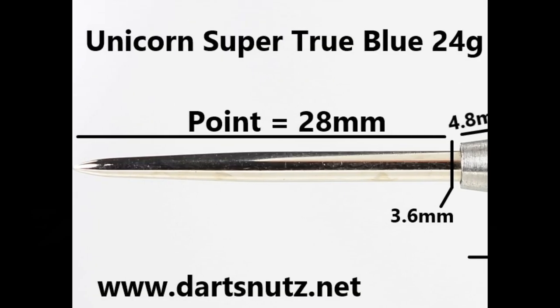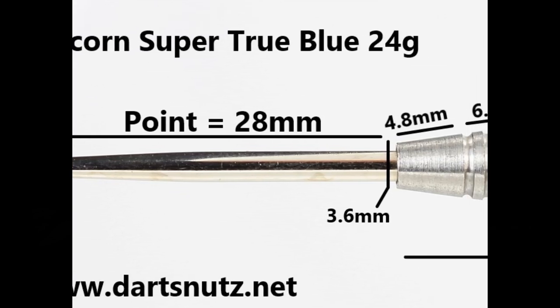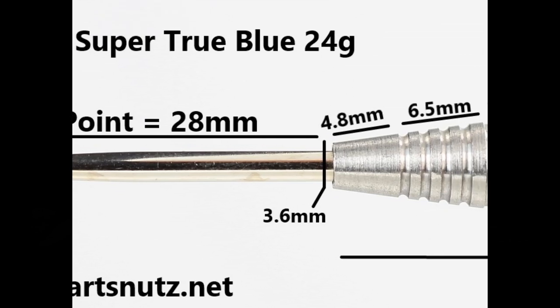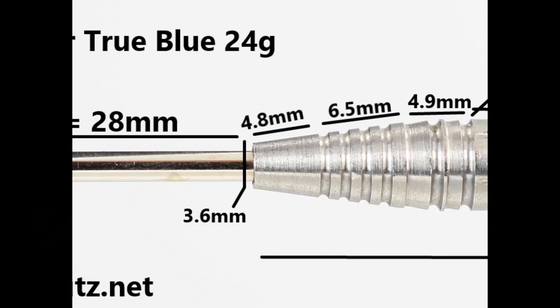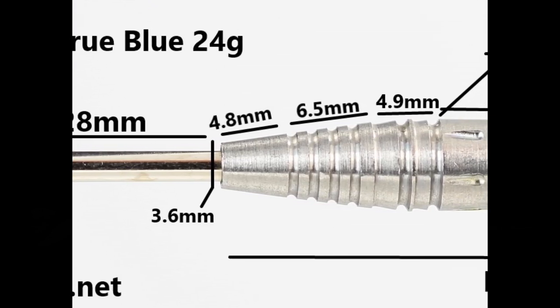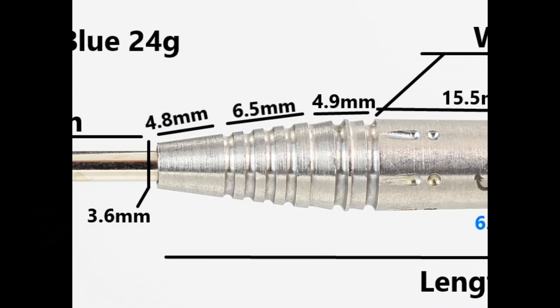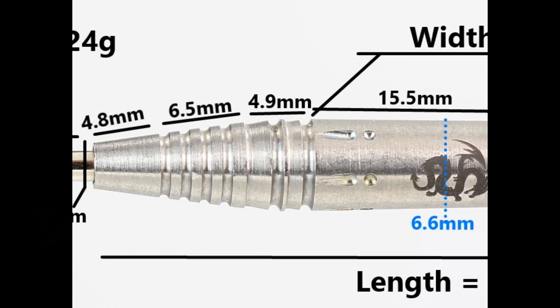The darts are fitted with a 28 millimeter silver point. There's a smooth section at the front of 4.8 millimeters. Then you've got a kind of standard ring grip of 6.5 millimeters. Then a slightly mixed rings and grooves and a ring with a pronounced lip on it, that's 4.9 millimeters. And then you've got this mostly smooth section except for the notches and circular indents at the front, that's 15.5 millimeters.